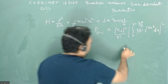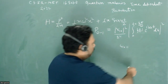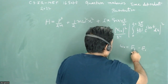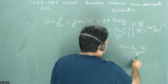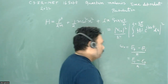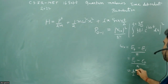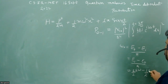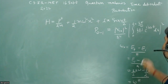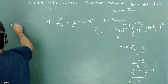First, let's calculate ω₀. This is given by (E_f − E_i)/ℏ, where E_f = E₁ and E_i = E₀. We get (3/2 ℏω − 1/2 ℏω)/ℏ, which gives ω₀ = ω.